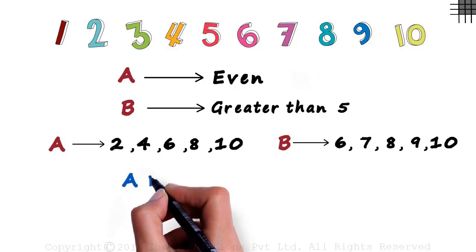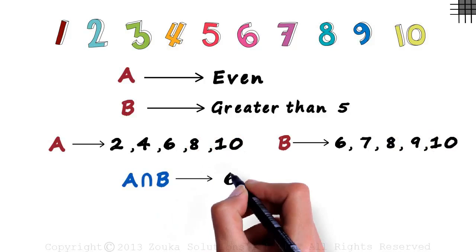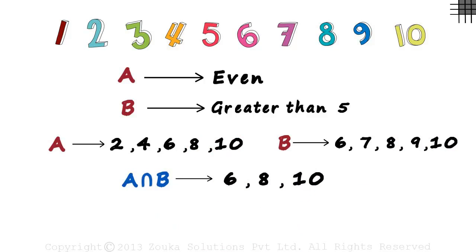First, let's look at A intersection B. It is the case of both events occurring together. The number in this set should be even and should be greater than five. Basically, it will be the set of numbers that are common to both these sets. We can see that six is common to both. Eight and ten are also common to both. So it will be six, eight and ten. Three numbers.